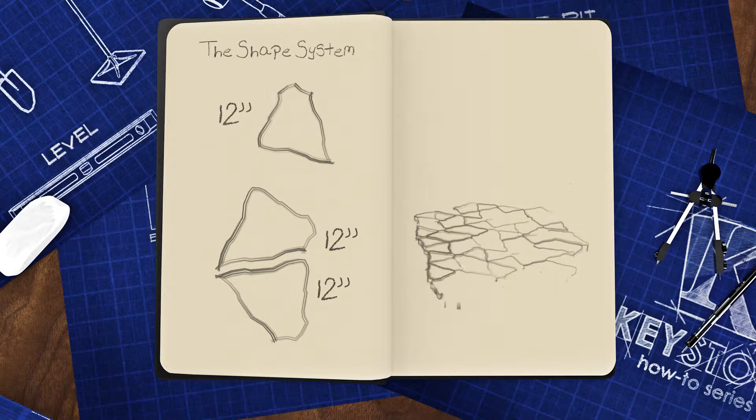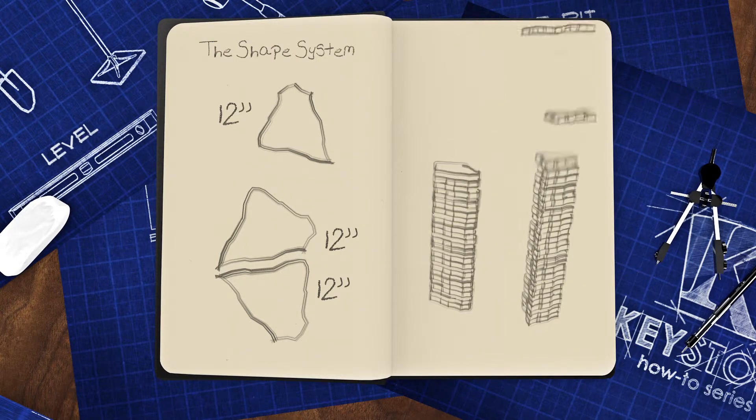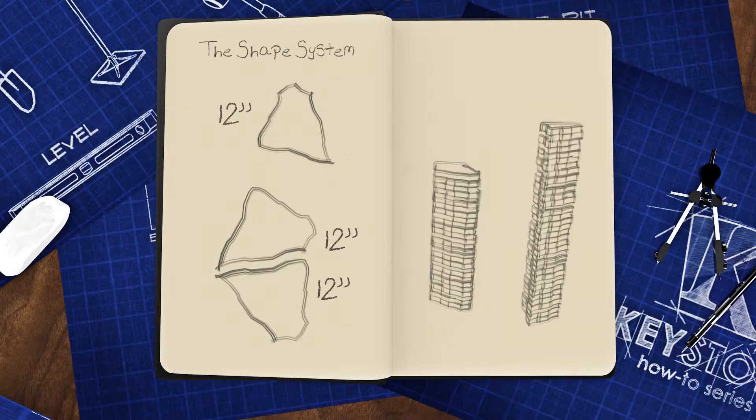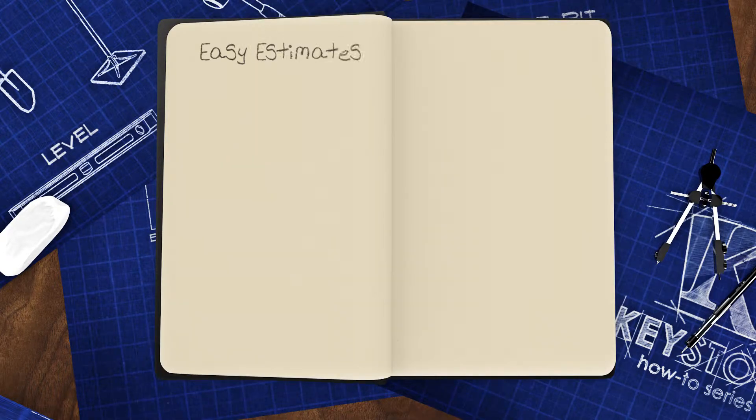But how do you figure out how many you need for your patio? It just so happens we have an easy way for you to do just that. So grab a pen and paper. First, determine the square footage of your project area. Let's make this project 90 square feet to use for an example.